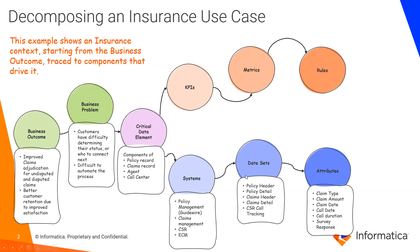In your systems, you're going to have movement of data — maybe from the policy system and a claim system into the CSR application, and finally into a business intelligence dashboard where you're looking at how well you've responded to that claim. All of these are things you might want to model in an EDC lineage and then apply Axon data and policy on top of that.